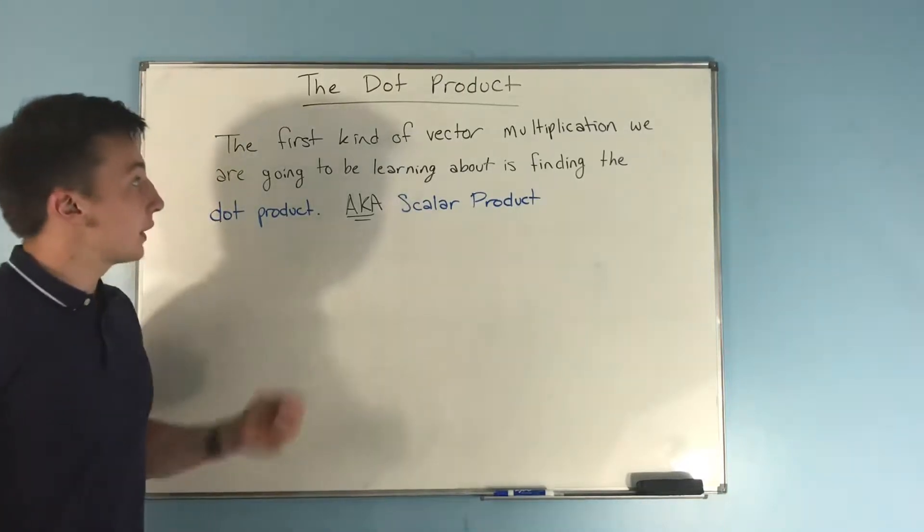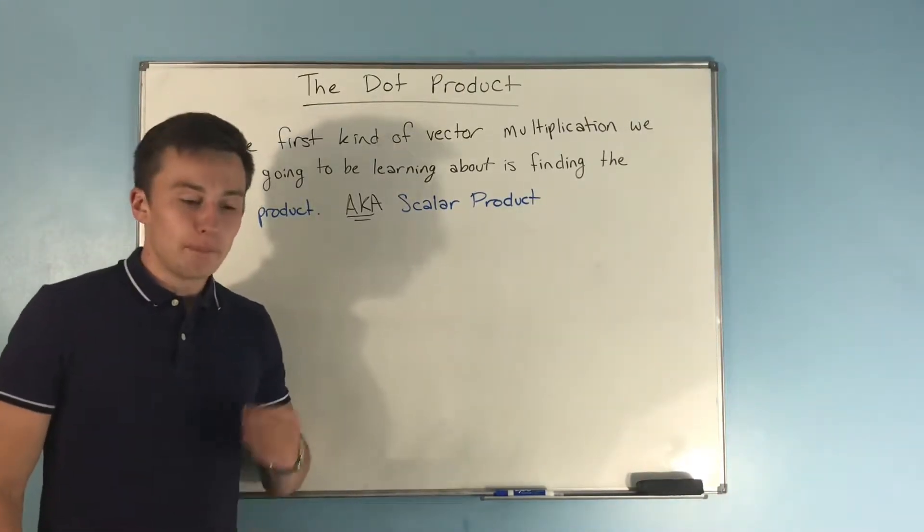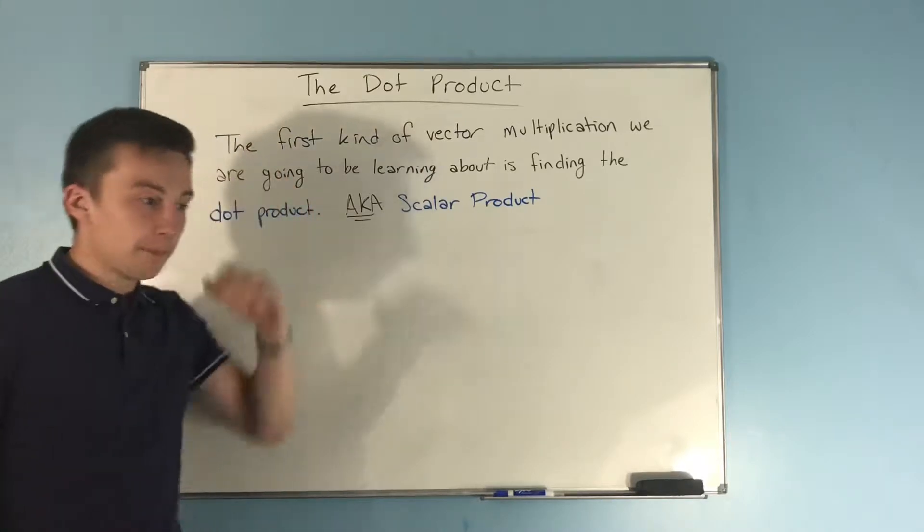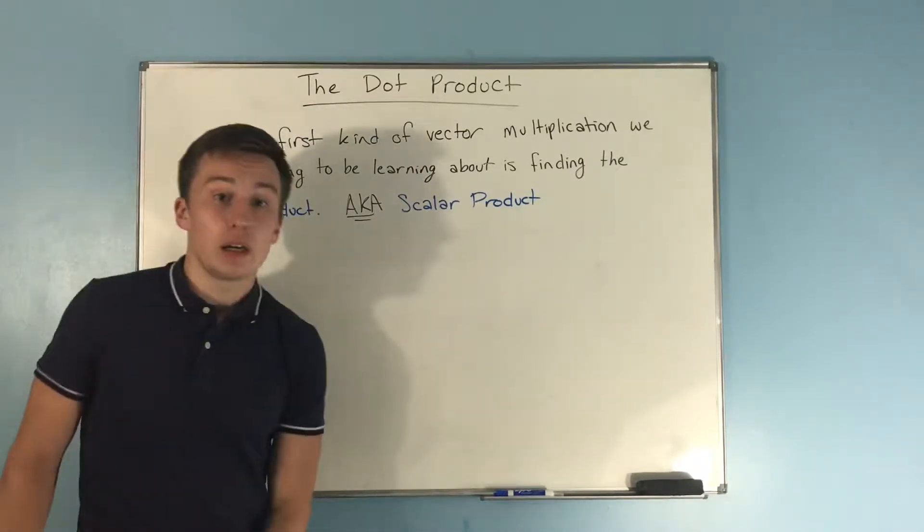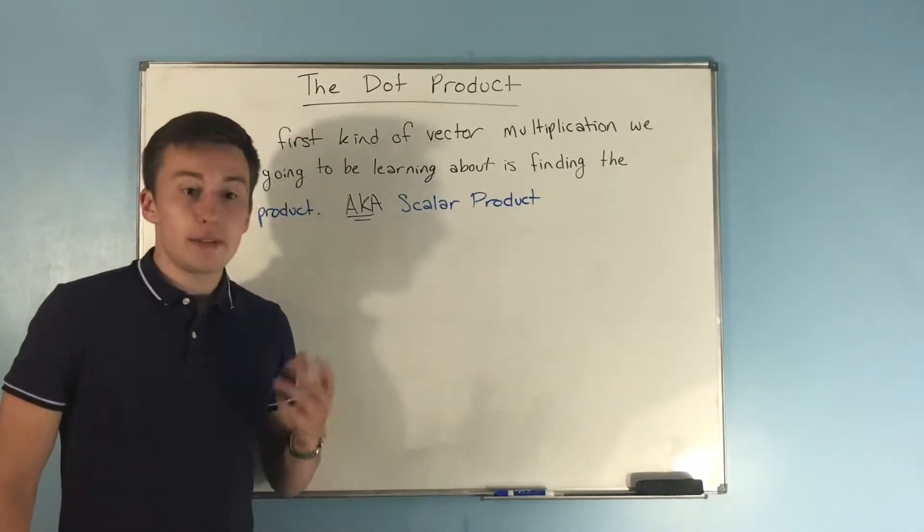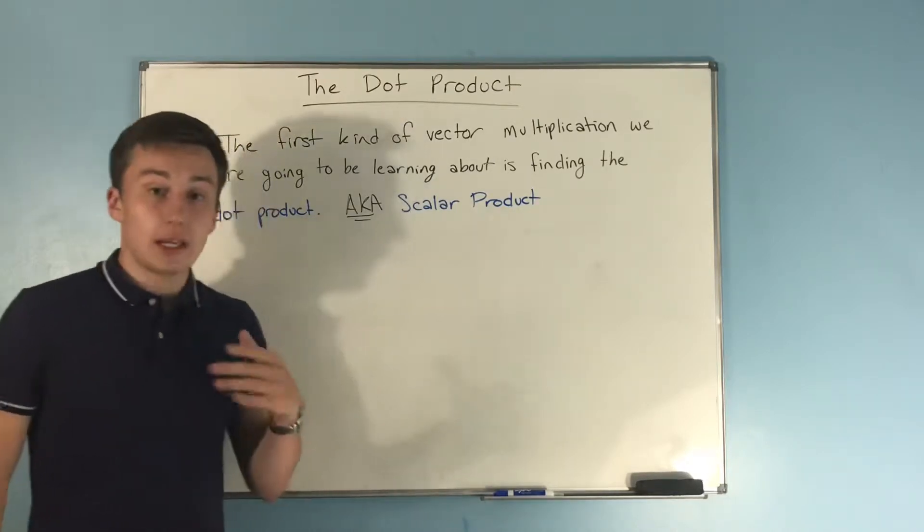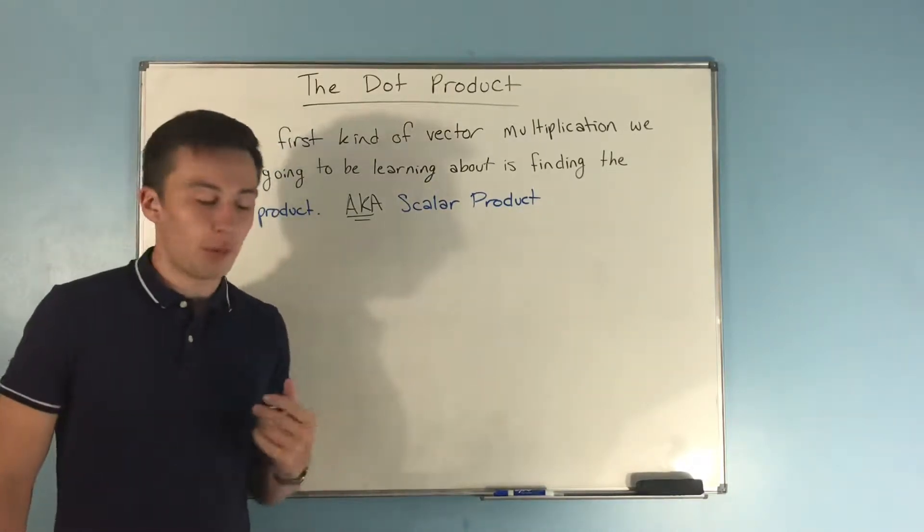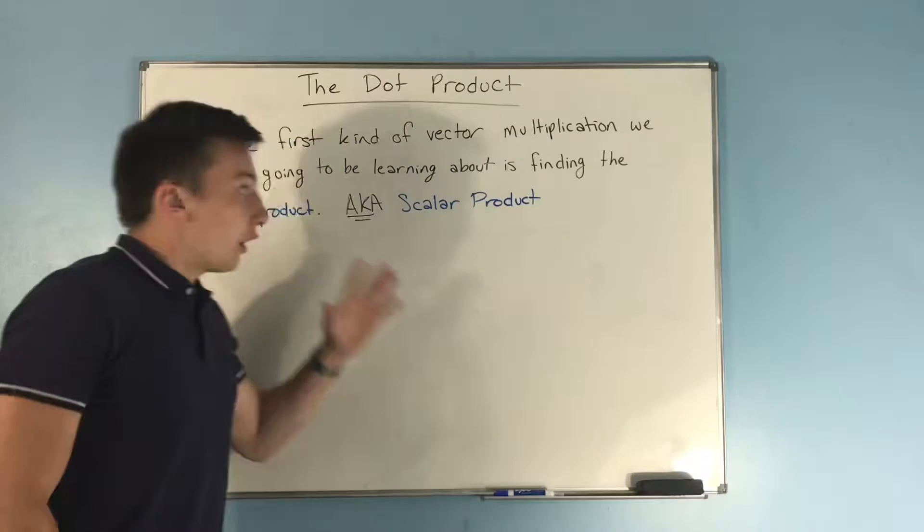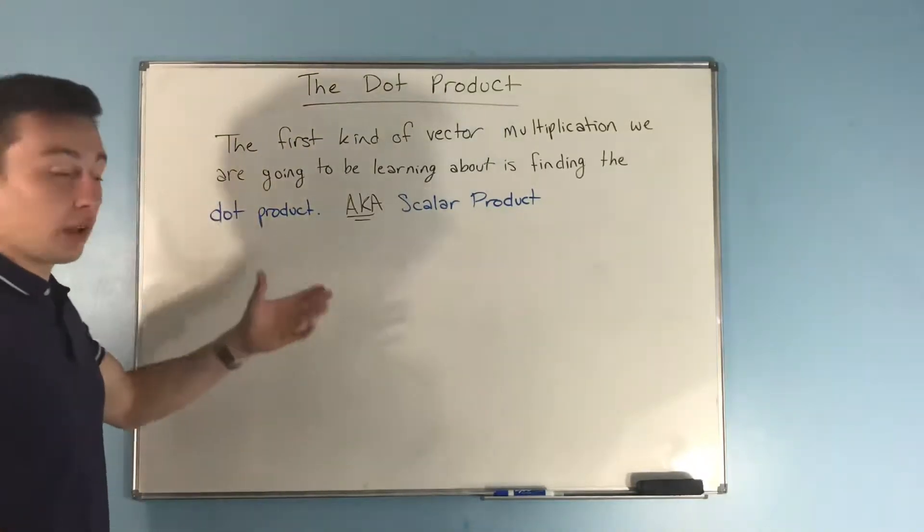In this video we're going to be talking about the dot product. We've done some work with multiplying a scalar times a vector, but now we're going to start to multiply a vector times a vector.